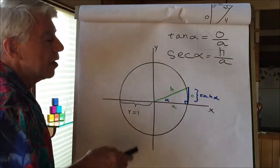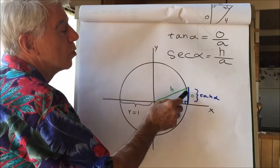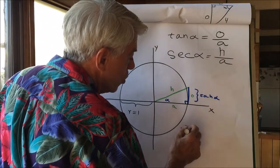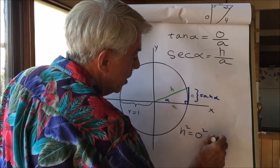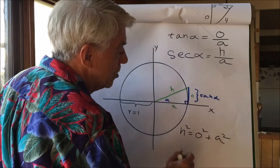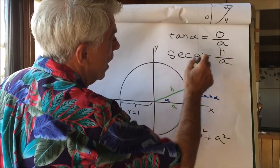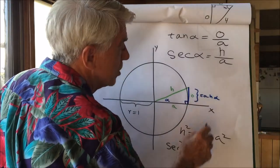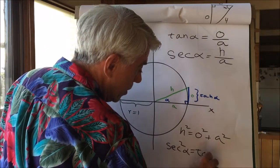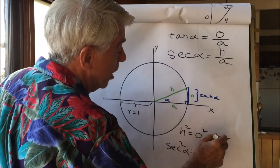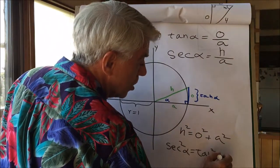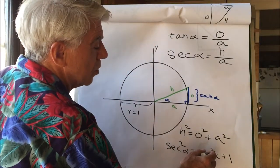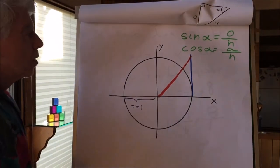Now the Pythagorean theorem says that the hypotenuse squared is equal to the sum of the squares of each side: hypotenuse squared equals opposite squared plus adjacent squared. Let's do some substitution. The secant is the hypotenuse, so secant of alpha squared equals the opposite — which is the tangent — squared, plus the adjacent, which is 1 in the unit circle. So we have secant squared equals tangent squared plus 1.